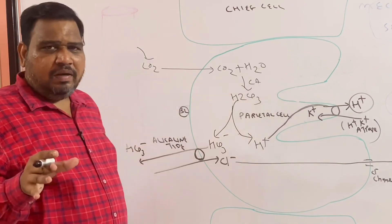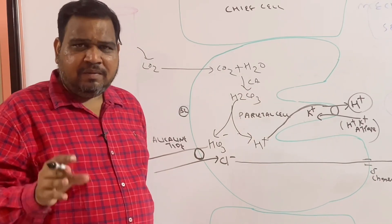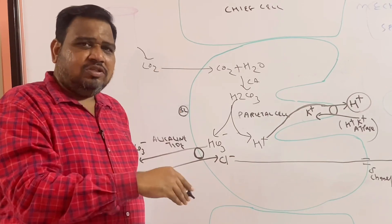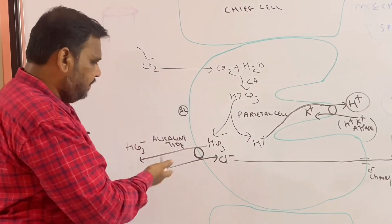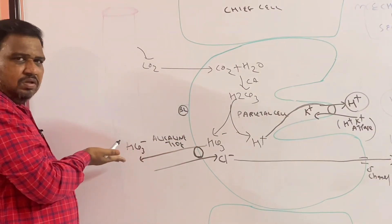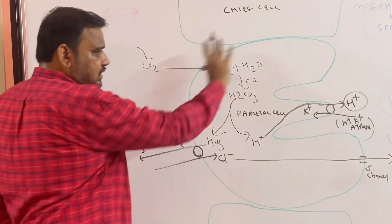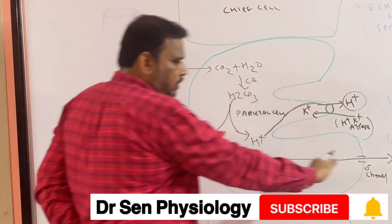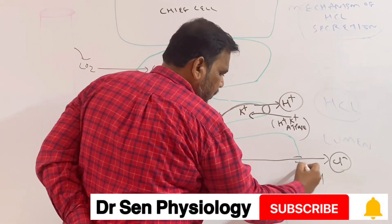For every H+ secreted into the lumen, one bicarbonate enters into the blood vessel via the basolateral membrane, and that bicarbonate entry is called the alkaline tide. For this bicarbonate entry, it has to be exchanged with chloride. For every bicarbonate going into the blood vessel, there is a chloride entering into the parietal cell. This chloride comes via the chloride leaky channel, or chloride channel.